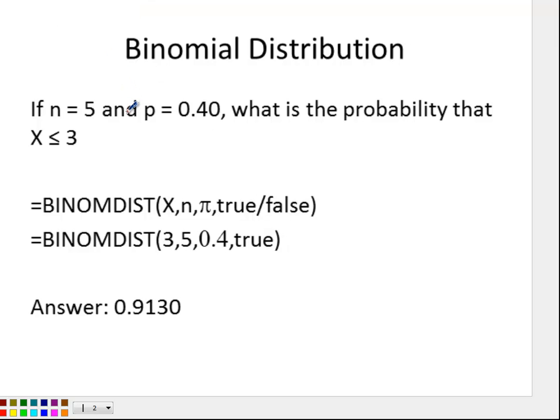Let's do another problem. We have 5 trials and the probability of success is 0.4. We want to figure out the probability that the number of successes is less than or equal to 3 — you might see it written as P(X ≤ 3). In this case, the number of successes is 3, the number of trials is 5, the probability of success is 0.4, and we want the last part to say true because we want everything less than or equal to 3 — we want it to be cumulative. Once you put that in Excel, you get 0.9130.